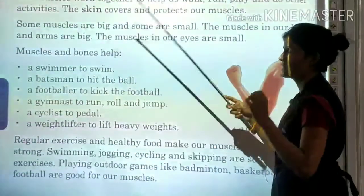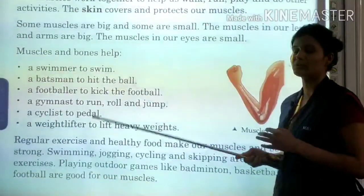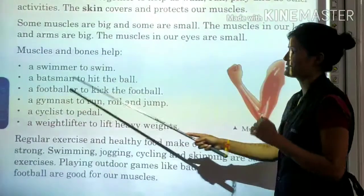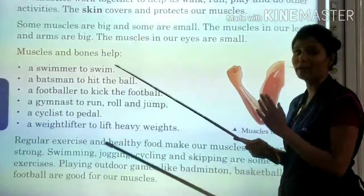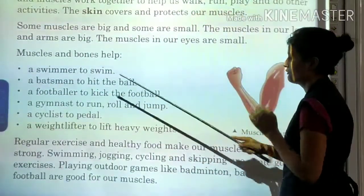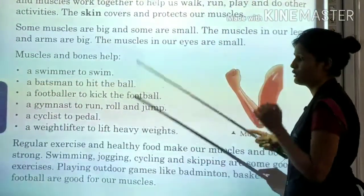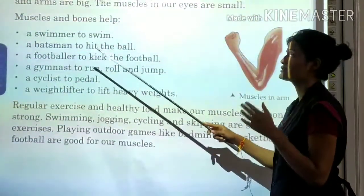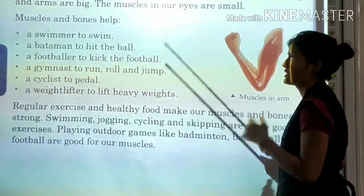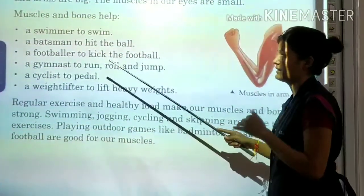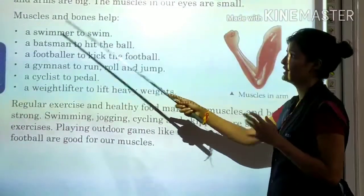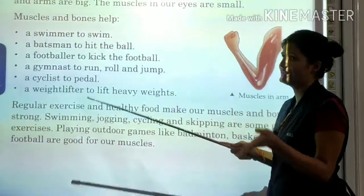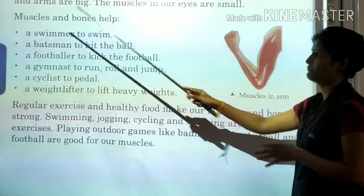Muscles and bones help a swimmer to swim, a batsman to hit the ball, a footballer to kick the football, a gymnast to run, roll and jump, a cyclist to peddle, and a weightlifter to lift heavy weights. We perform all these activities with the help of our bones and muscles.